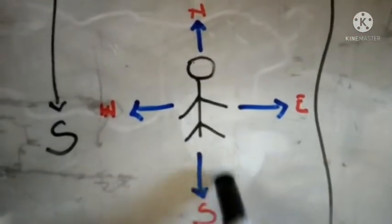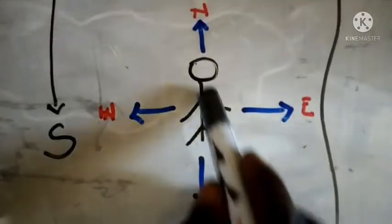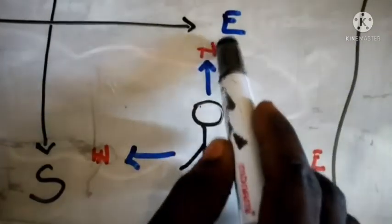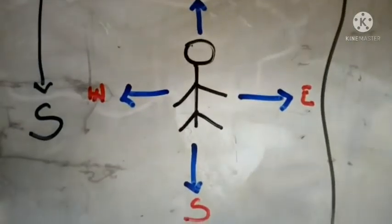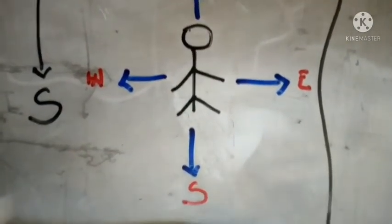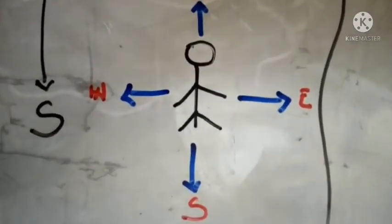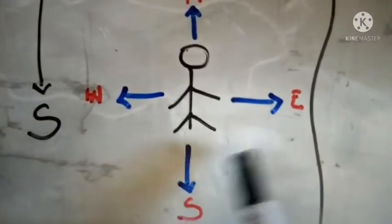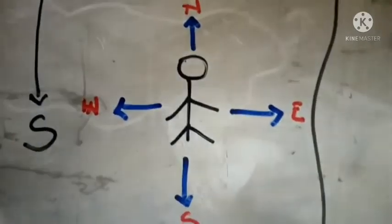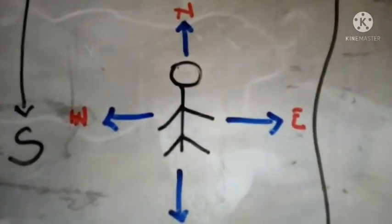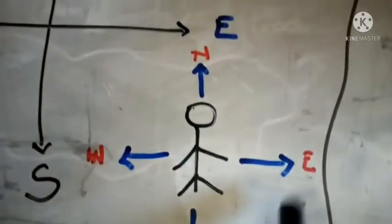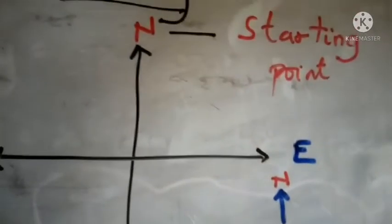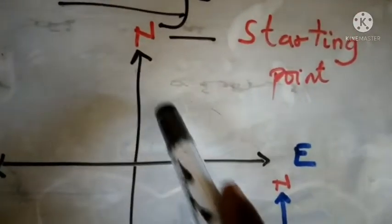Have a look at this picture. Assuming you are here, what you are facing is your north direction, and at the back of you is south. If you are facing the camera right now, the left hand side will be west and the right hand side will be east. That is simply how bearing works in mathematics.